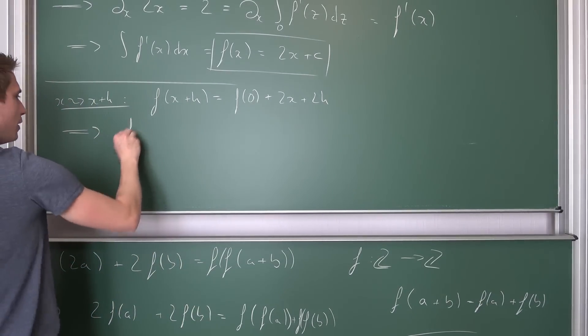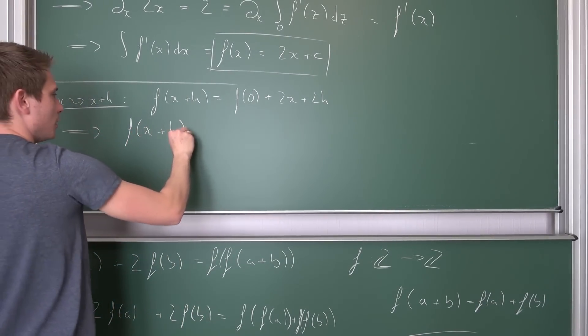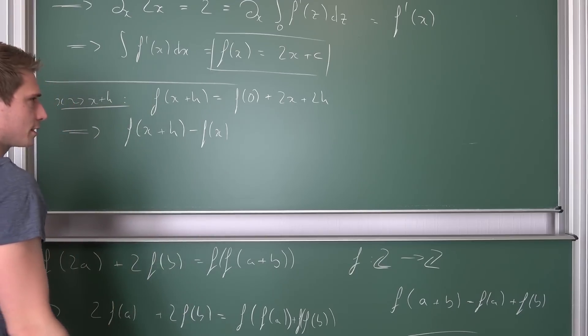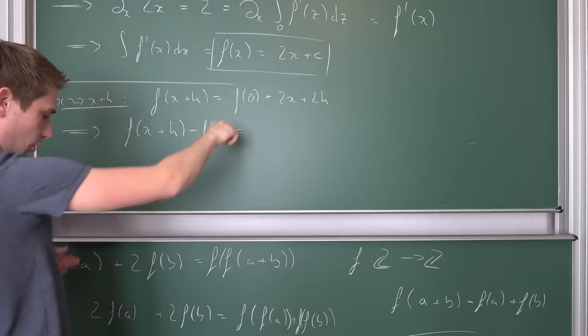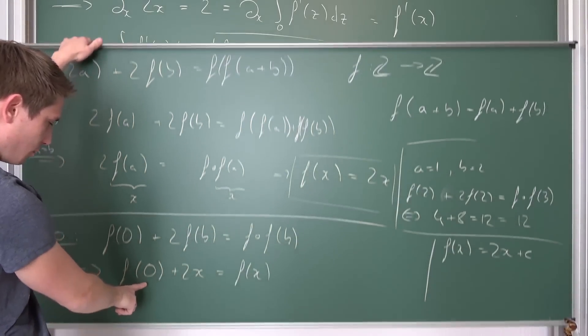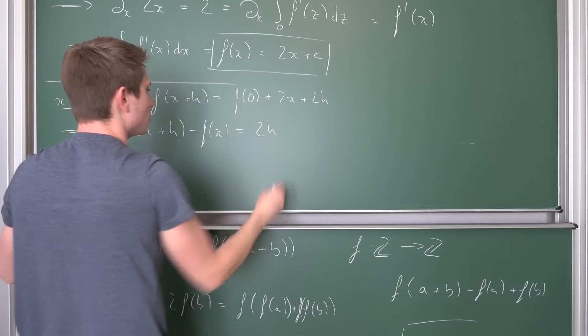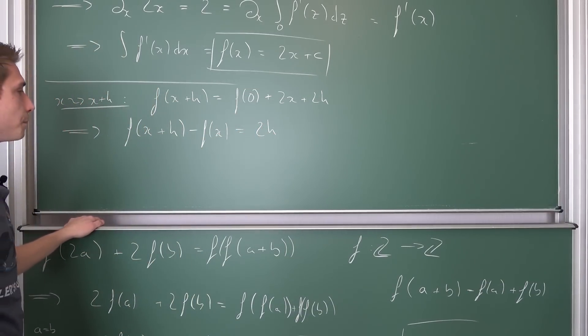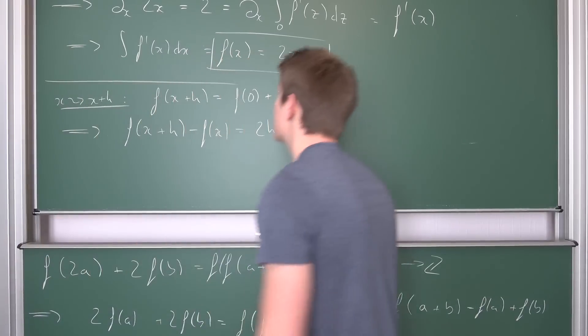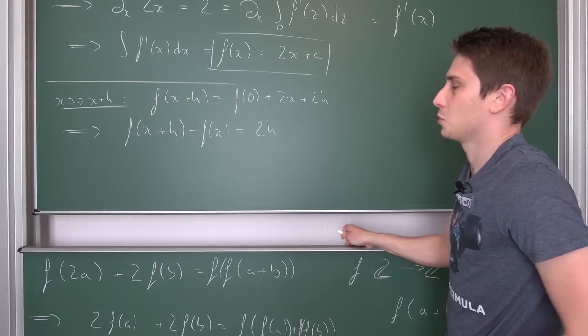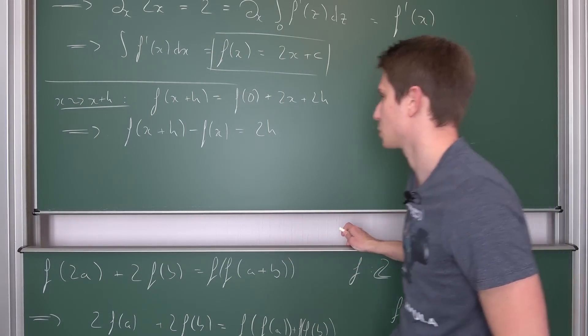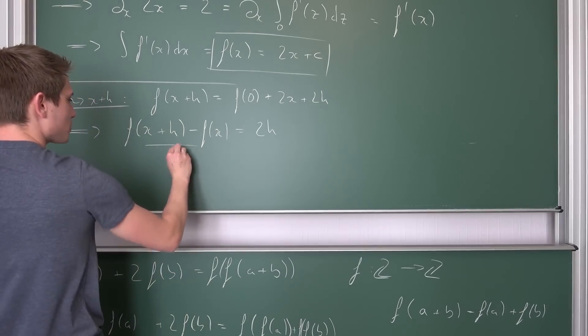We are going to have f(x+h) minus f(x) is equal to f(0) is a constant, it's going to vanish. 2x is also going to vanish, so we are going to get 2h. Now we are going to assume that our h is not equal to 0. We want it to be non-zero, meaning we can divide both sides by it.